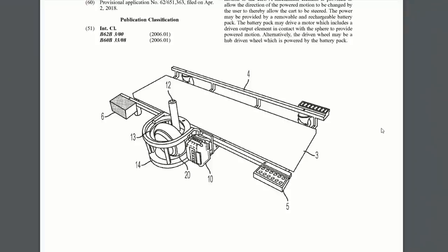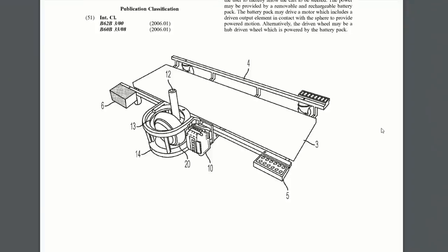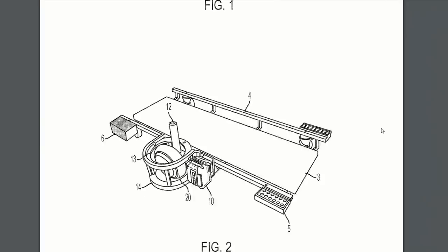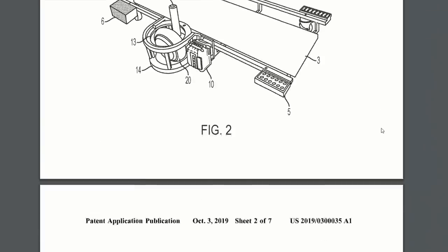This next one is for a motorized mechanics creeper powered by a flexible battery that you can see in the drawings here. So I don't think it's a Mac tools patent under Stanley Black and Decker. I think it's for DeWalt tools because they're showing the flexible batteries.